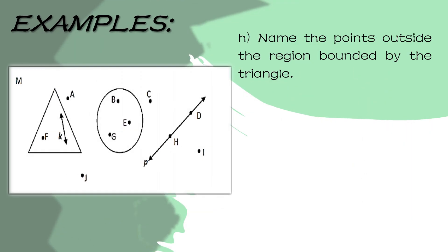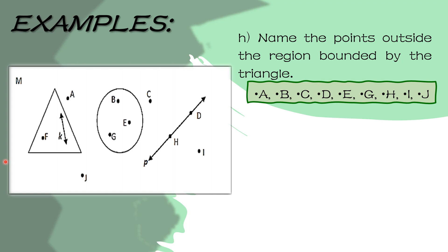Next question — name the points outside the region bounded by the triangle. Pangalanan daw natin yung mga points na nasa labas ng triangle. Ang point na nasa loob ng triangle is point F. So ibig sabihin, isusulat natin lahat ng points na nasa loob ng plane M bukod sa F or except sa F. So those are the points A, B, C, D, E, G, H, I. Hindi kabilang ang point F dahil nasa loob siya ng triangle at ang hinahanap ay mga points na nasa labas ng triangle.